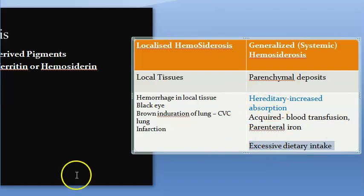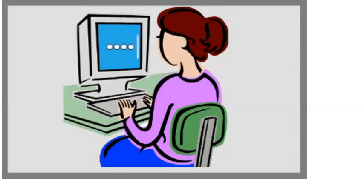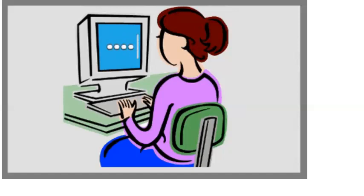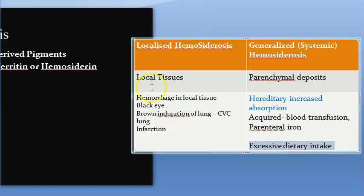Excess dietary iron intake can also cause generalized hemosiderosis. To summarize: local hemosiderosis is due to local hemorrhage, CVC lung from left heart failure, infarction from ischemia, or black eye causing periorbital hematoma.